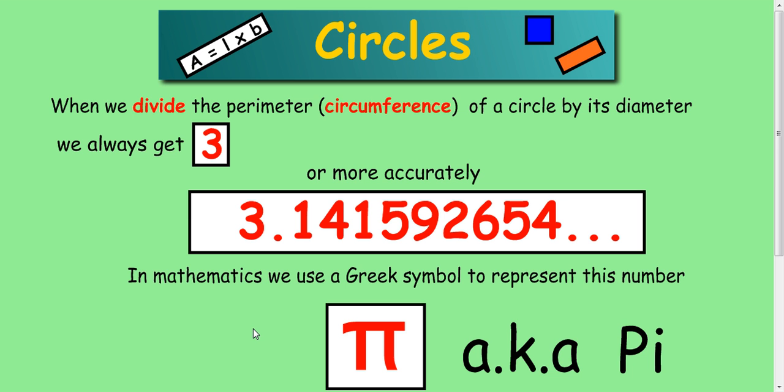Now this works for any circles, big circles, small circles, really small, really large circles. If you take the circumference and divide it by the diameter, you always get roughly three, or more accurately this number here, which we call pi in mathematics.